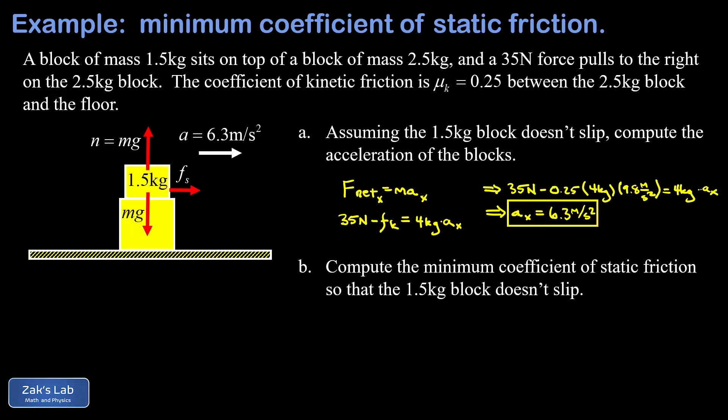The result of that would be the 1.5 kilogram block slipping off the back of the 2.5 kilogram block, kind of like the old trick of pulling a tablecloth out from under the dishes. So what we want to determine here is actually the smallest possible static friction coefficient that will keep this thing locked in and accelerating at a rate of 6.3 meters per second squared.